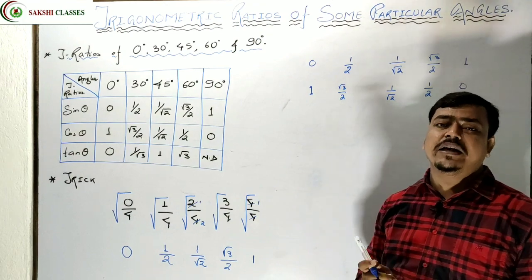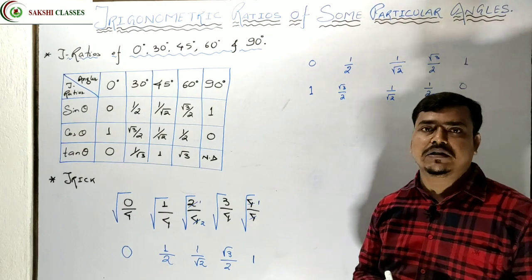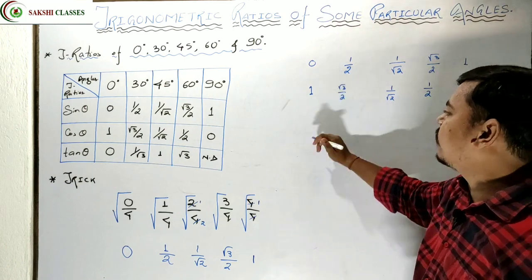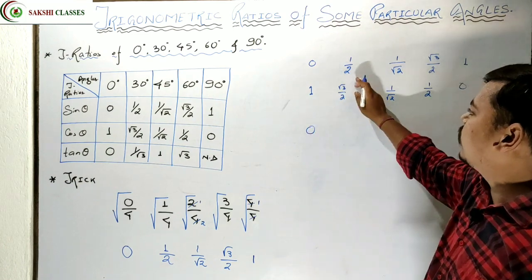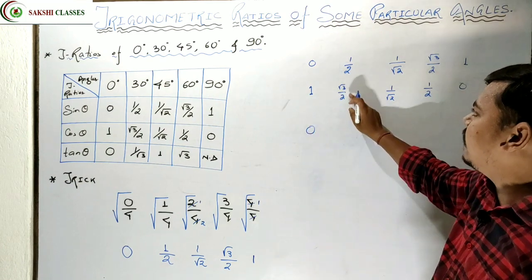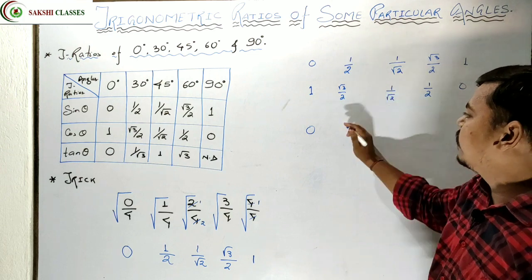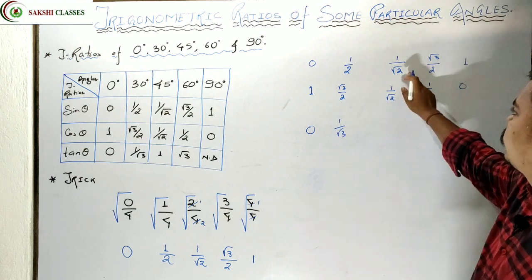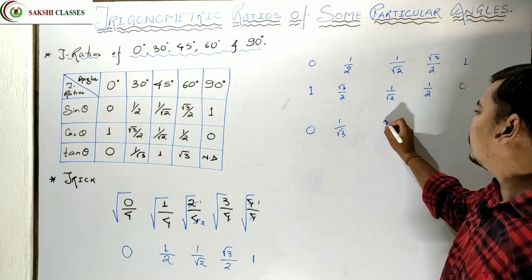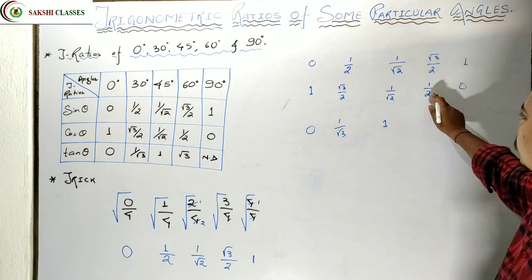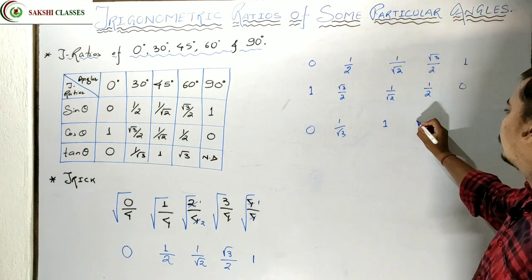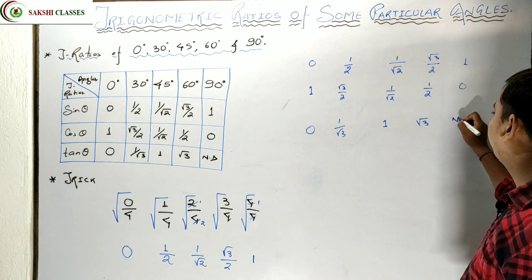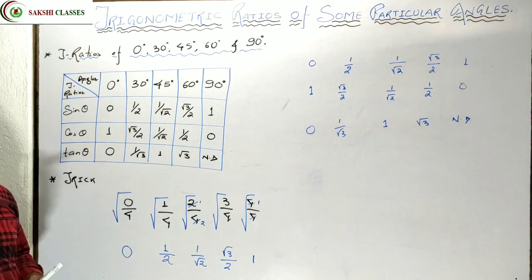For tan, remember that sin/cos = tan, i.e., sin θ / cos θ = tan θ. So tan 0° = 0/1 = 0. Tan 30°: the 2s cancel, giving 1/√3. Tan 45°: numerator and denominator cancel, giving 1. Tan 60°: simplifies to √3/1 = √3. And tan 90° = 1/0, which is not defined.